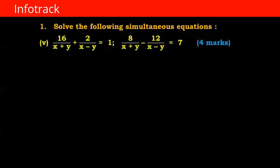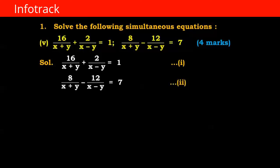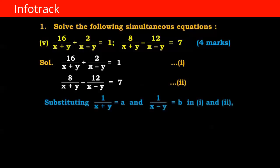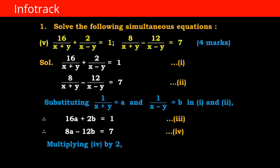Solve the following simultaneous equations. In question number 5: 16 upon (x plus y) plus 2 upon (x minus y) equals 1 — equation number 1. And 8 upon (x plus y) minus 12 upon (x minus y) equals 7 — equation number 2. Now substituting 1 upon (x plus y) equals a and 1 upon (x minus y) equals b in equations 1 and 2, we get 16a plus 2b equals 1 — equation number 3.